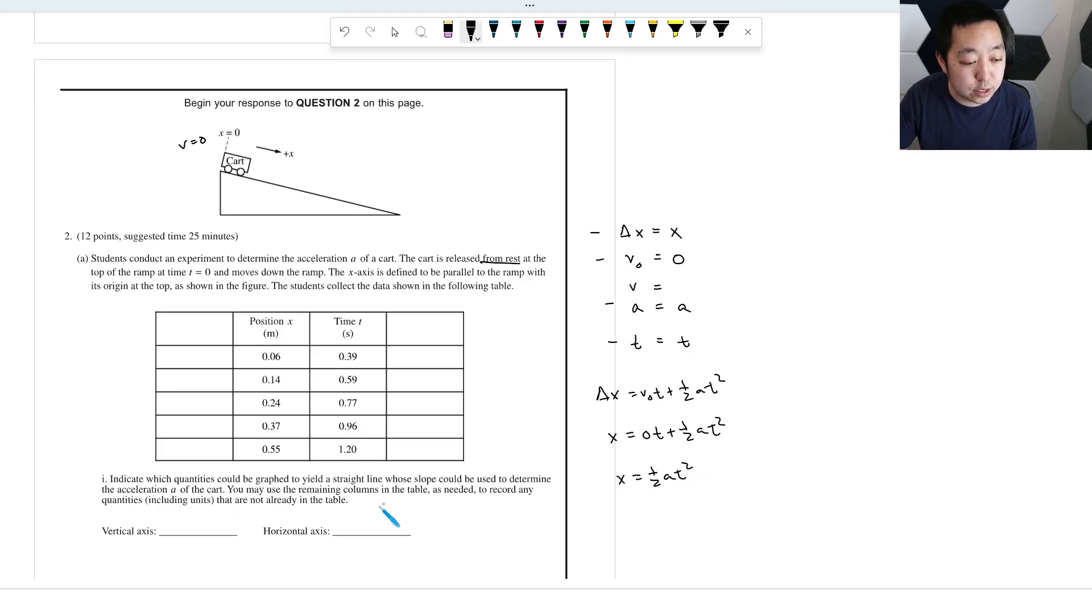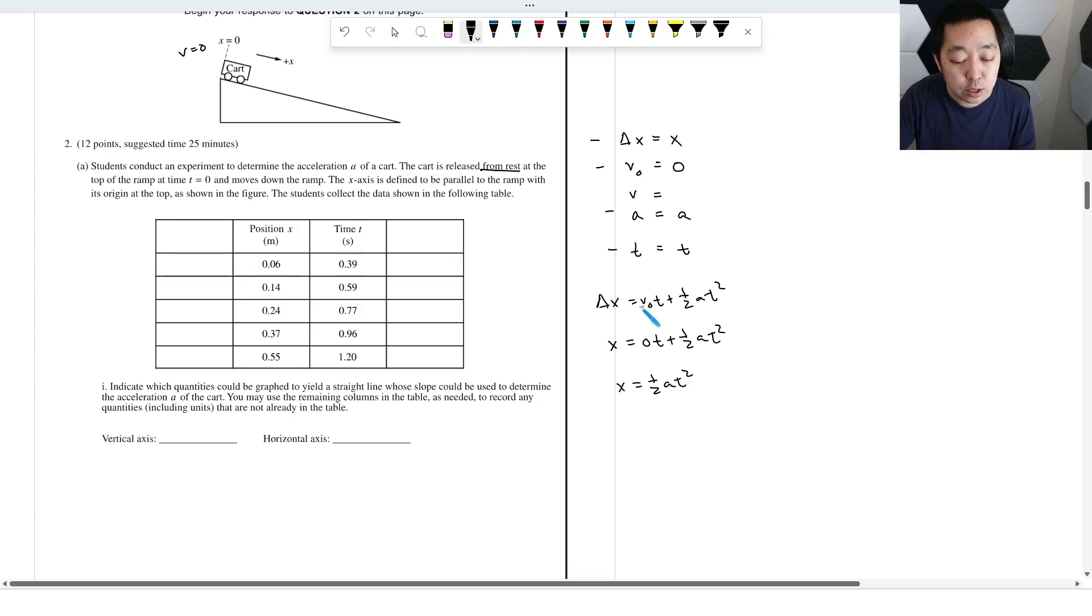So you would have x is equal to zero t plus one half a t squared. So it's x equals one half a t squared. And if you want something that's going to be a straight line, you always want to think about it as like y equals mx. So this is going to be my y variable. And let's just make the one half t squared, that will be x. And therefore, a is my m. So I'm going to, you don't have to use the one half in there. But I like to do that, just so the slope directly is going to be my 9.8 meters per second squared. So the vertical axis is going to be the position. And the horizontal axis, I'm going to do one half t squared. And the slope will give me the acceleration.